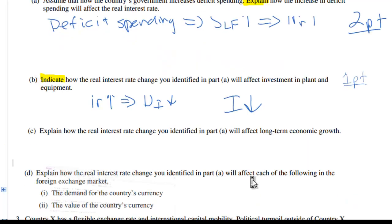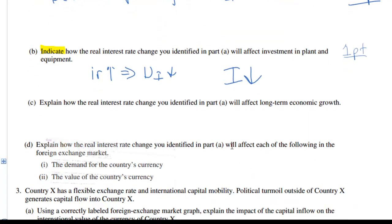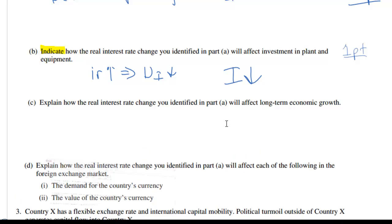Let's move on to part C. Explain how the real interest rate change you identified in part A will affect long-term economic growth. This question posed a challenge to my own AP Macro students — they didn't exactly see the connection between investment and long-run economic growth. But there is a very important connection. Long-run economic growth refers to the increase in the output of the nation over a long period of time.